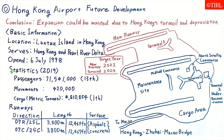Next, I'd like to check the statistical information for 2019. The passenger figure is 71,541,000, which ranks 13th in the world.